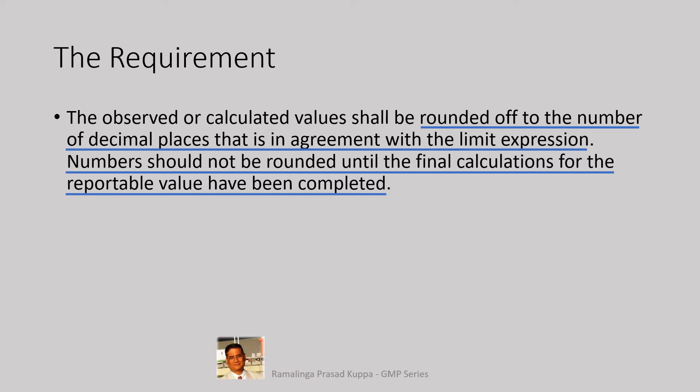After calculating the results as per the formula given in the monograph, you get a lengthy result with 4 or 5 or more digits after the decimal points. The guideline prescribes that the results should be rounded off to the number of digits as in the specifications. That means, if there are 2 digits after the decimal point in the specification, the final reportable result should have only the same 2 digits as final value. If there is 1 digit, the reported result should also have only 1 digit.